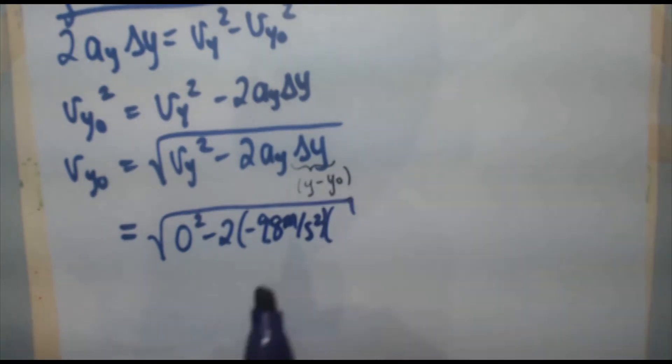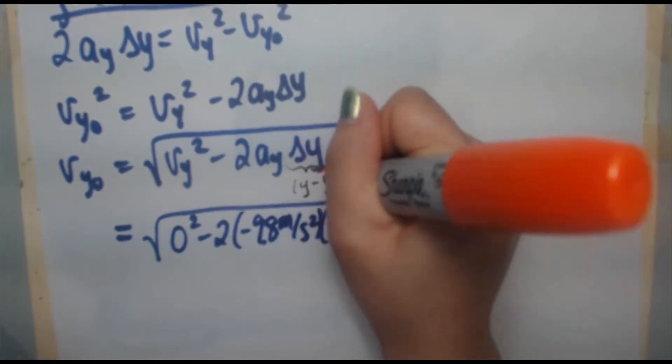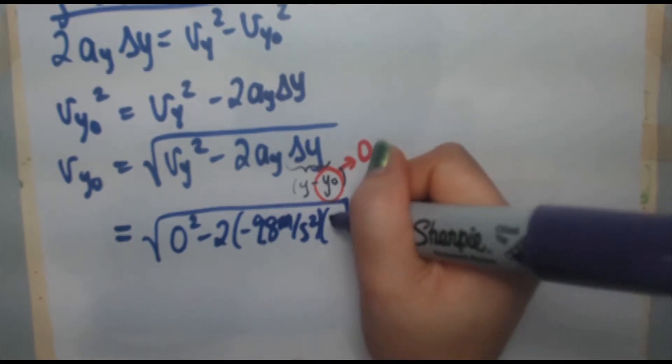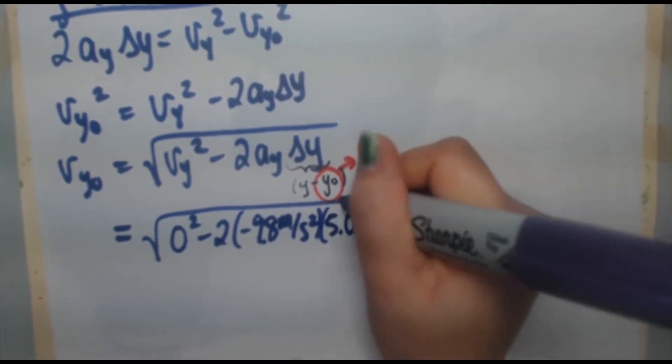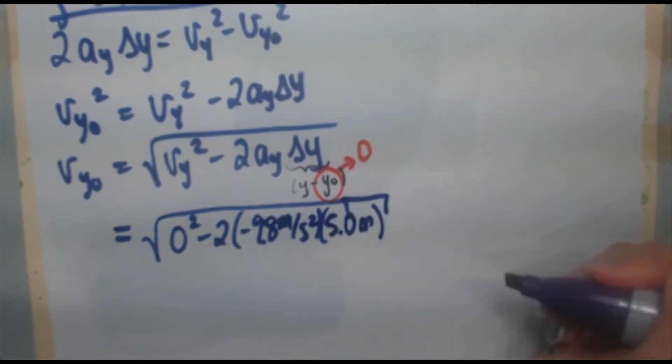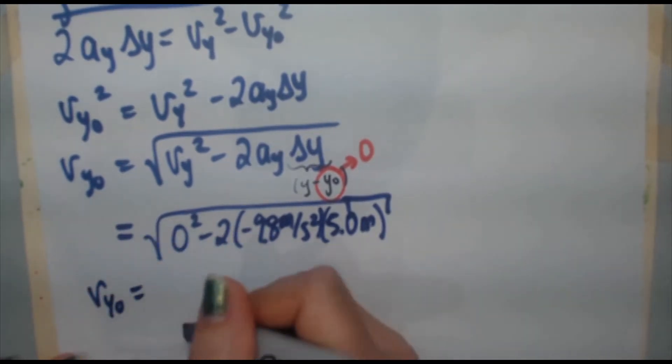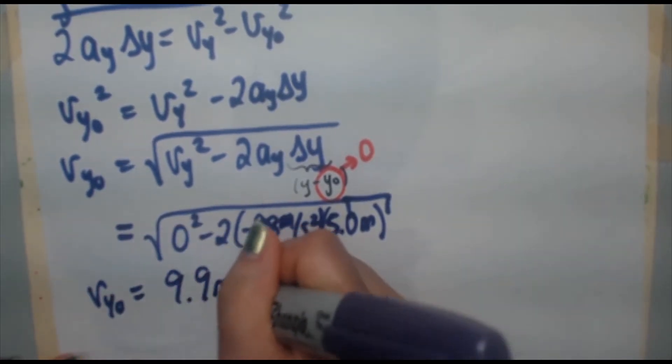So we just simply plug in our y value, which is 5.0 meters. When you plug that all into your calculator, you're going to get vy₀ is equal to 9.9 meters per second.